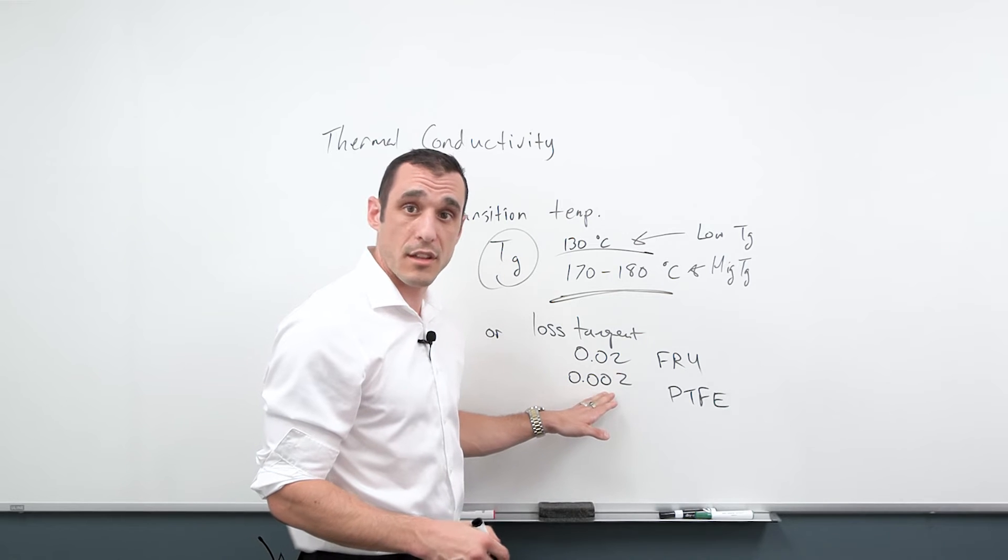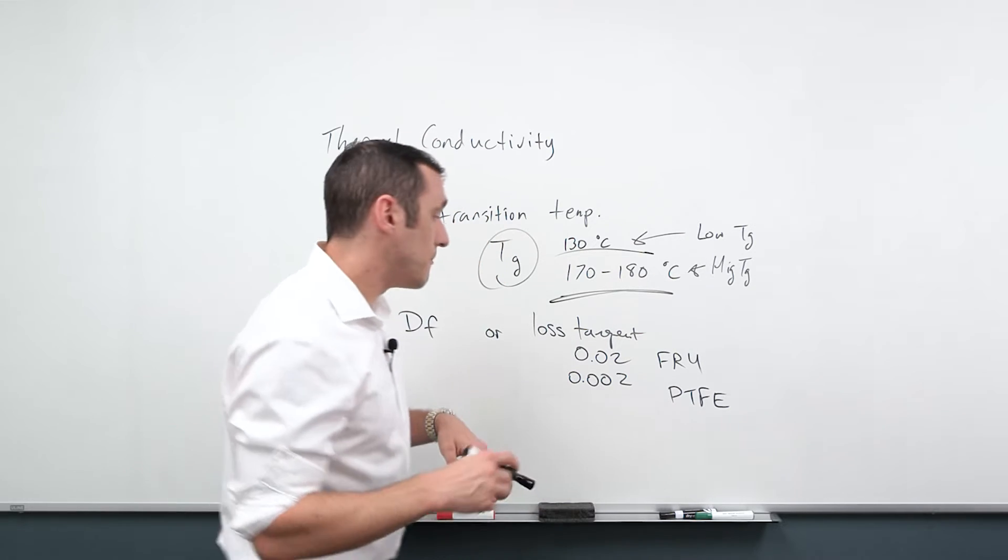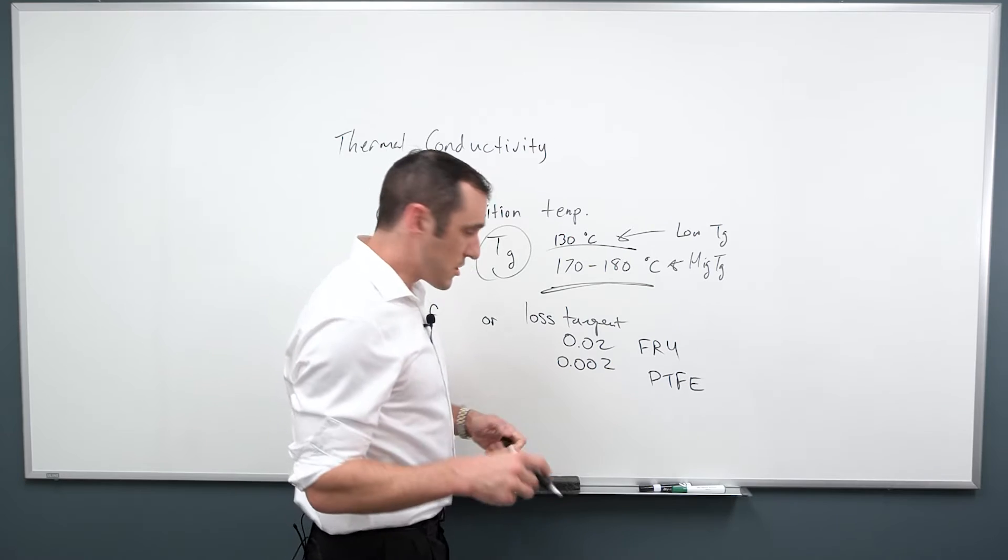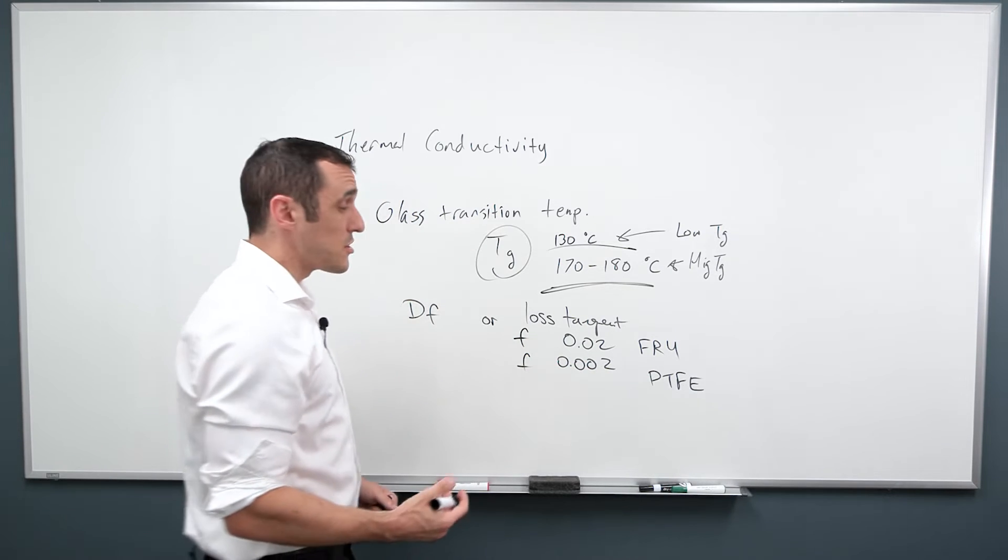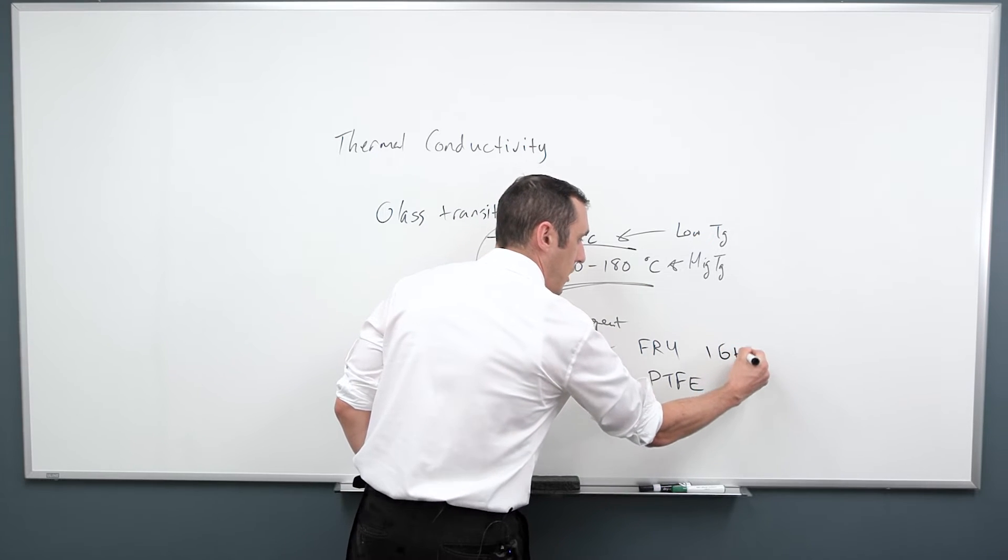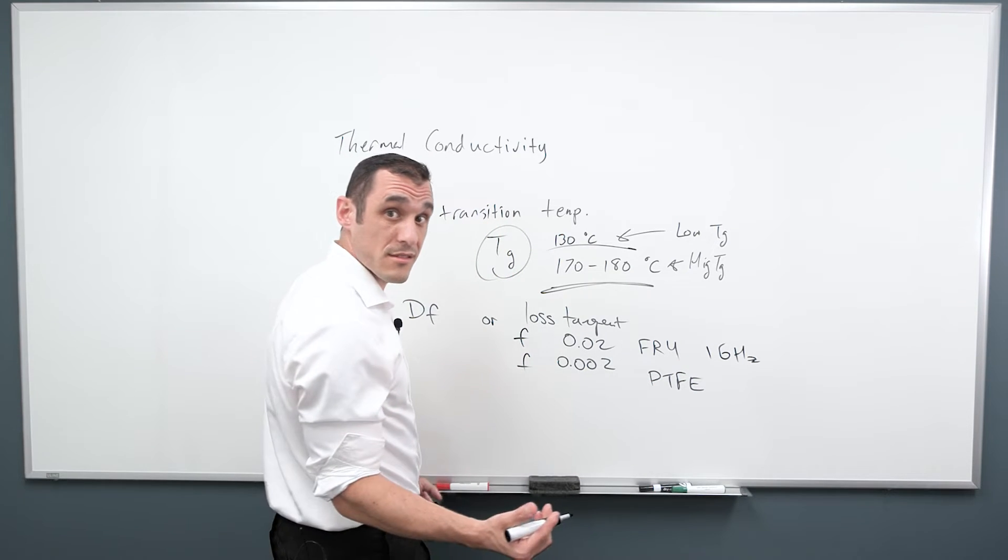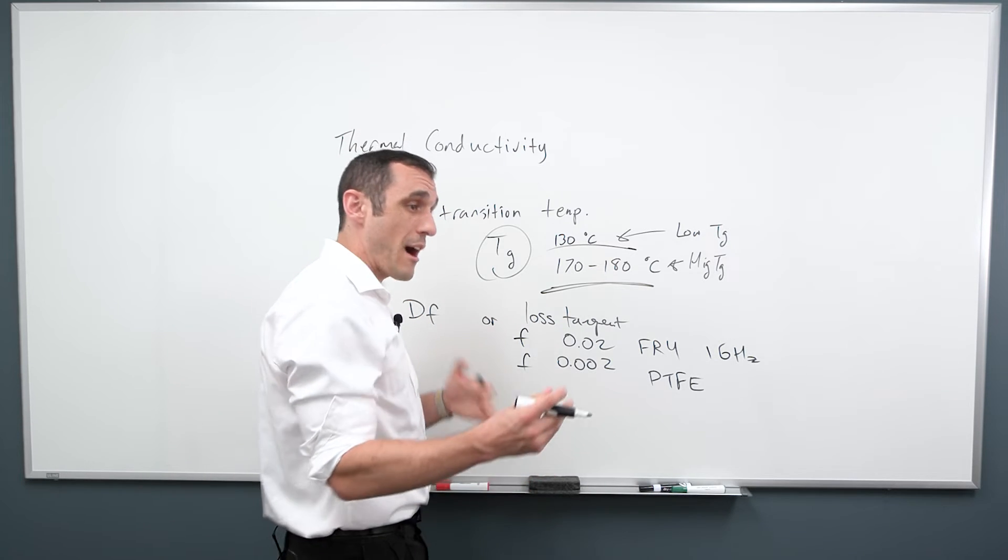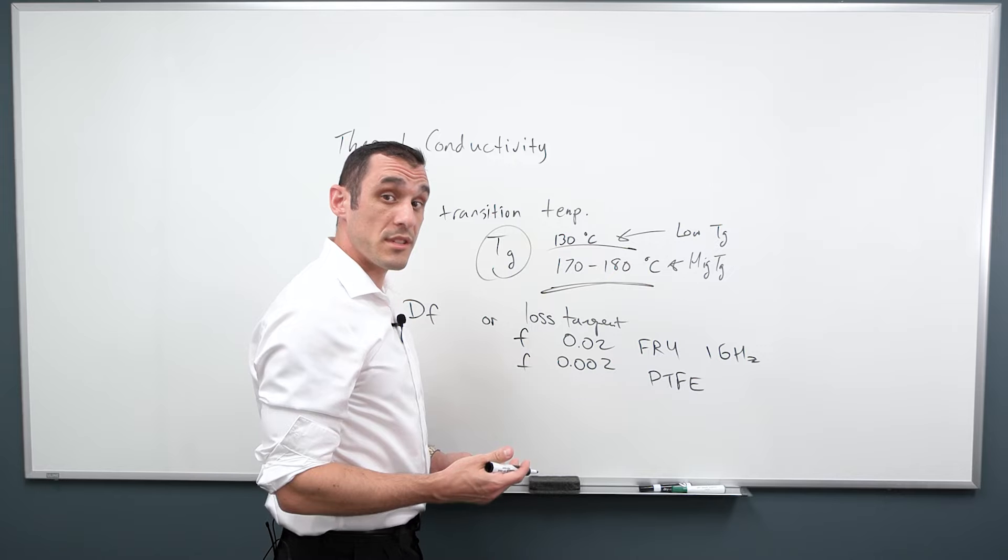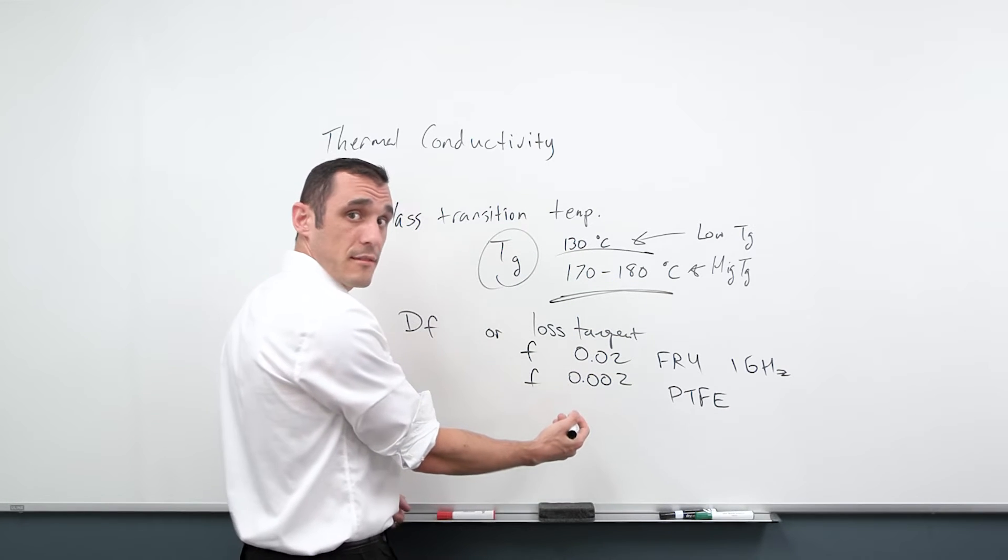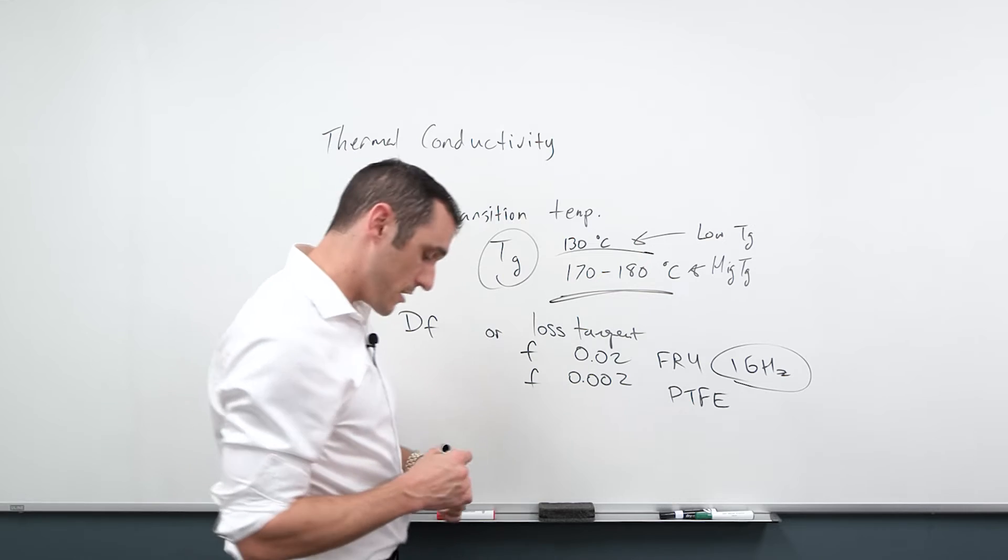There are a number of factors that determine the loss tangent and that can be resin content, the tightness of the fiberglass weave in the material. Those factors all combine to give you a loss tangent value. Now, what's also important is the frequency F at which these values are quoted. So sometimes you'll see this at maybe about one gigahertz. Sometimes you'll see this at maybe 10 gigahertz. Sometimes you'll see it at 100 megahertz. So that's actually also important because it's going to tell you about where that measurement can be taken as being reliable. In reality, these values actually are different depending on the frequency of the signal in your board.